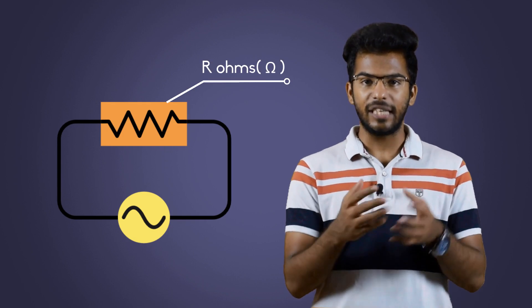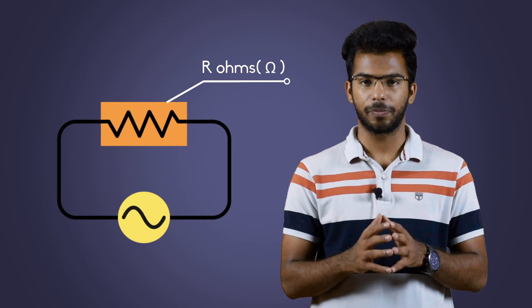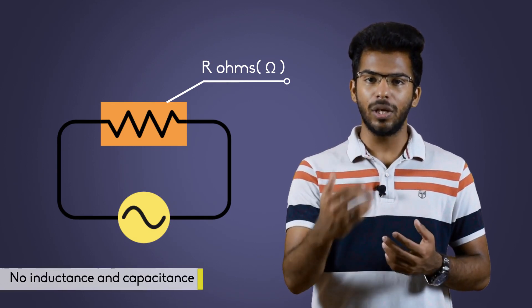The circuit containing only a pure resistance of R ohms in the AC circuit is known as pure resistive AC circuit. There is no inductance and capacitance in the purely resistive circuit.